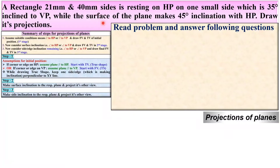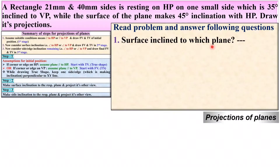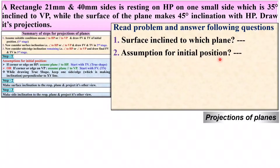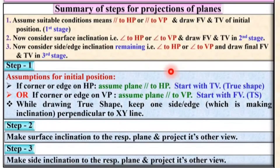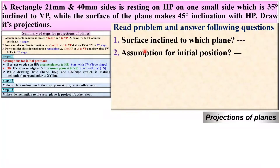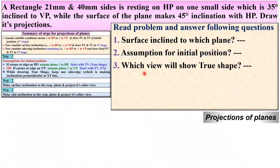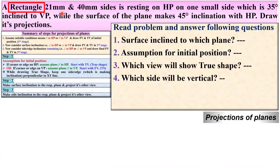Read the problem once again carefully and try to answer the following questions. First: surface inclined to which plane? Next: what is the assumption for the initial position? We have already discussed that we must assume in the first stage either the plane is parallel to HP or parallel to VP — so which assumption is suitable for this problem? Next: which view will show the true shape? And finally: which side will be vertical? The rectangle has four sides, so which side will be vertical?